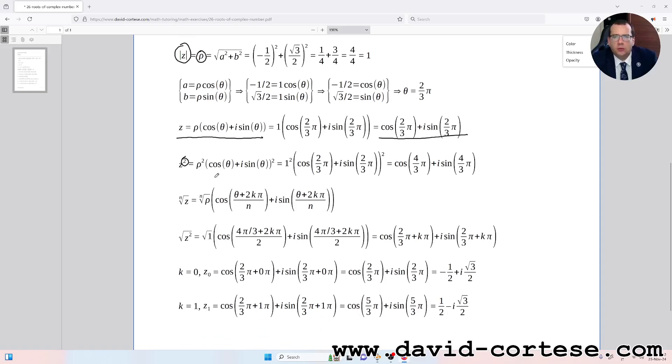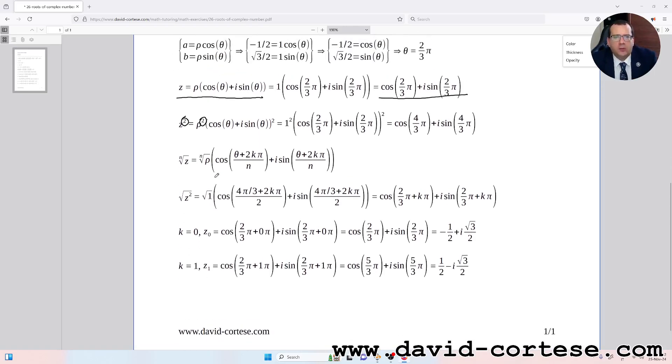For raising to the power of two, we need to do ρ² and (cos θ + i sin θ)², that is cos(4π/3) + i sin(4π/3). So for obtaining the roots, we need to use this formula: the nth root of the number is the nth root of ρ times [cos((θ + 2kπ)/n) + i sin((θ + 2kπ)/n)].